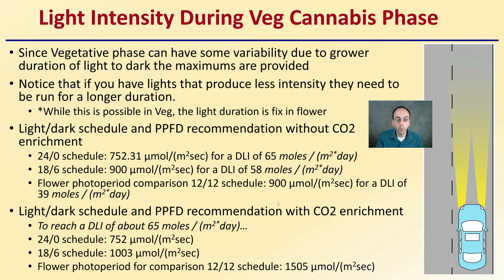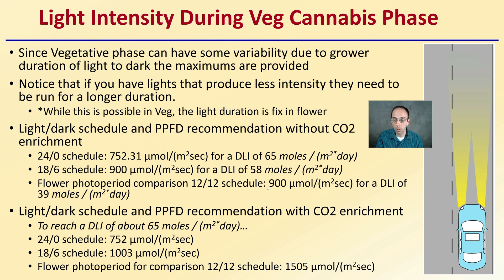With CO2 enrichment to reach the target of 65 moles per day: running lights for 24 hours requires a light producing 752 micromoles; an 18-6 schedule needs just over 1,000 micromoles; and for the flowering photoperiod, you need a light producing 1,505 micromoles per meter squared per second. Know what light intensity your setup is producing.